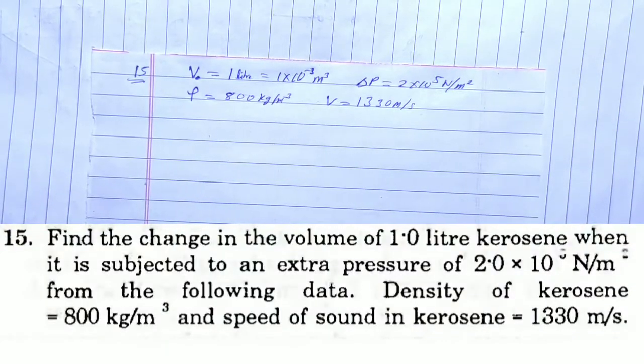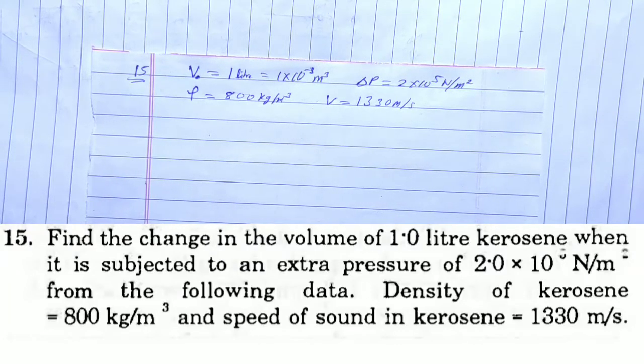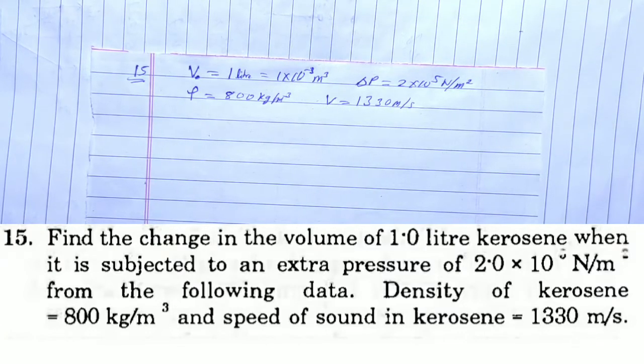HC Verma solution, Chapter 16 Sound Waves, Question 15: Find the change in the volume of 1.0 liter kerosene when it is subjected to an extra pressure of 2.0×10^5 N/m² from the following data. Density of kerosene = 800 kg/m³ and speed of sound in kerosene = 1330 m/s.